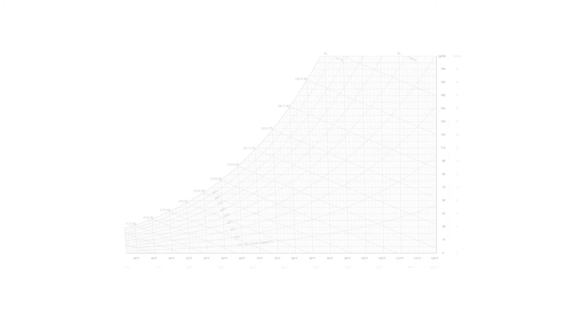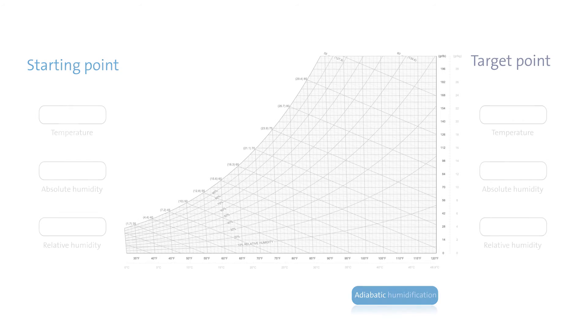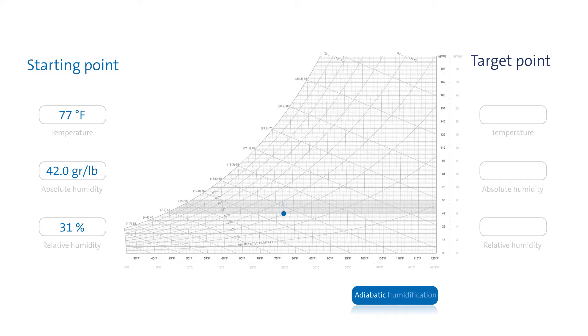A psychrometric chart can be used to illustrate this process. Adiabatic humidification of 14 grams of water per pound of air causes air temperature to cool down by 9 degrees Fahrenheit.